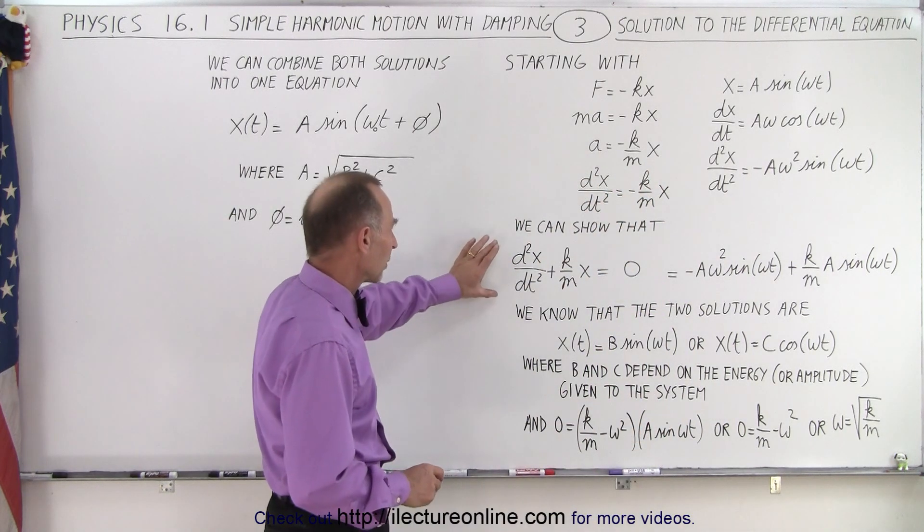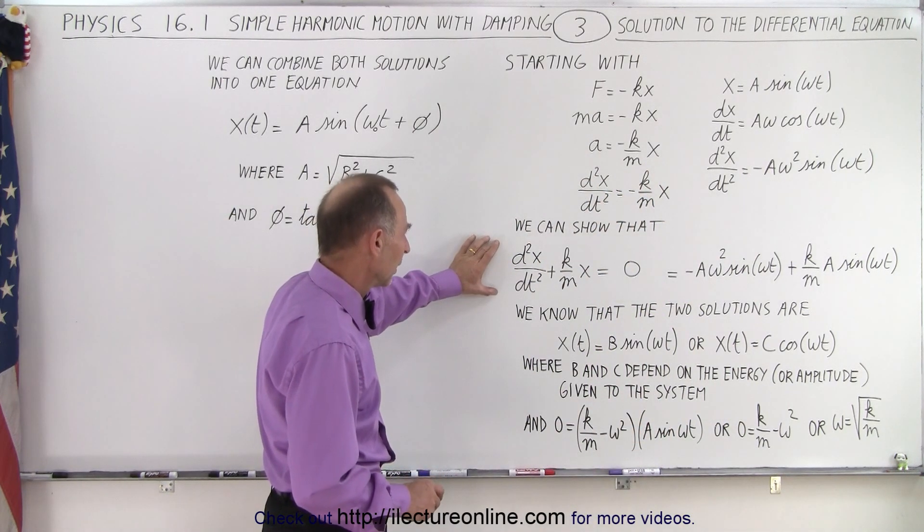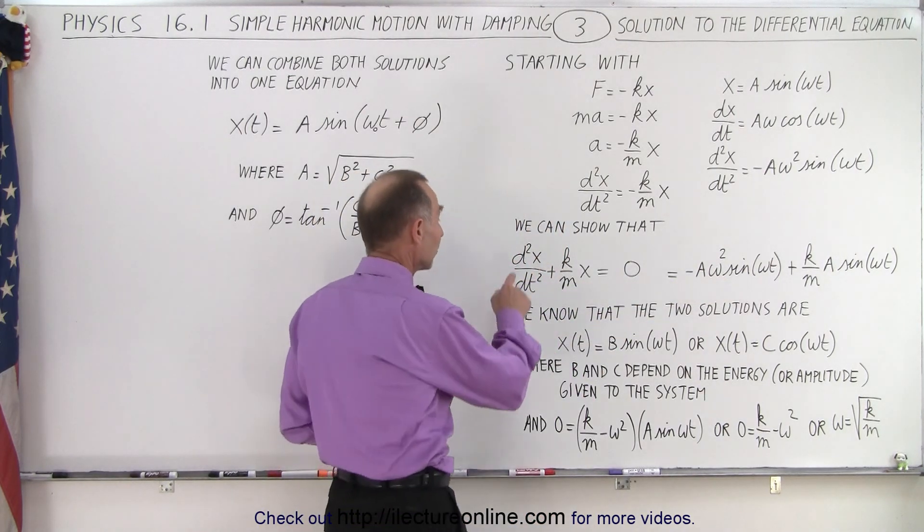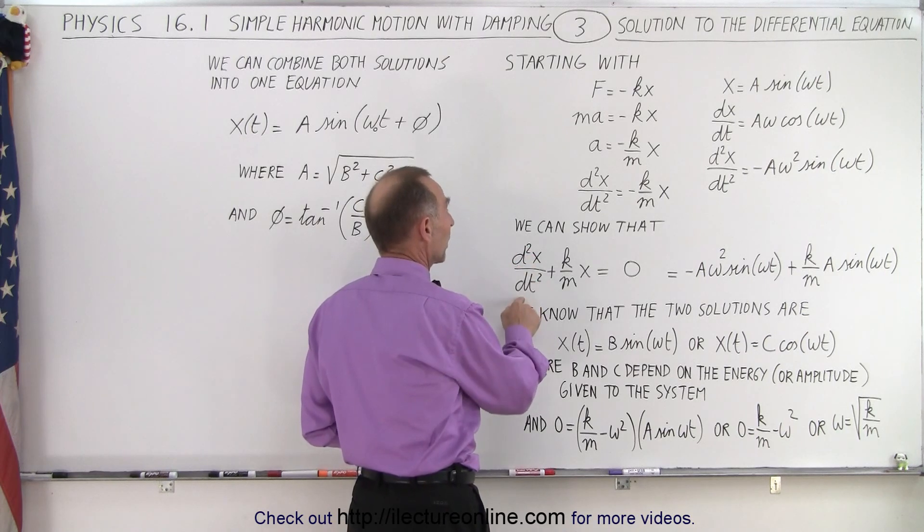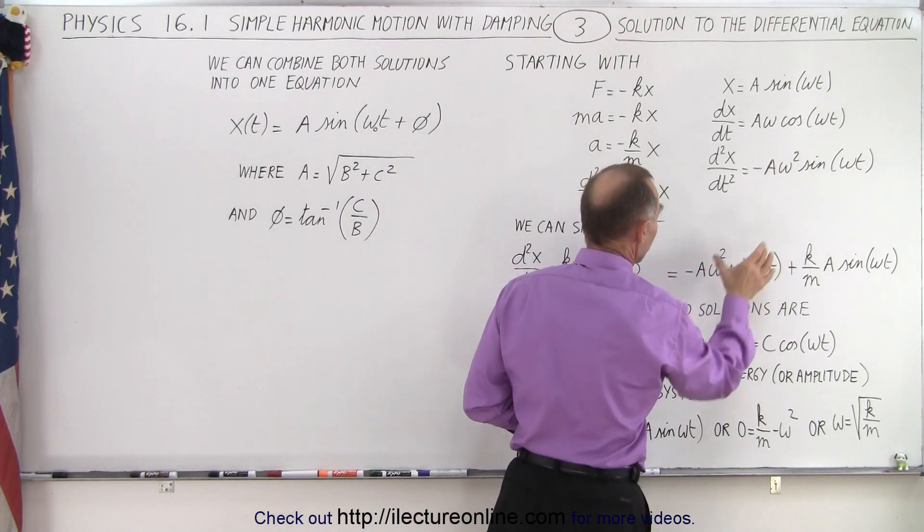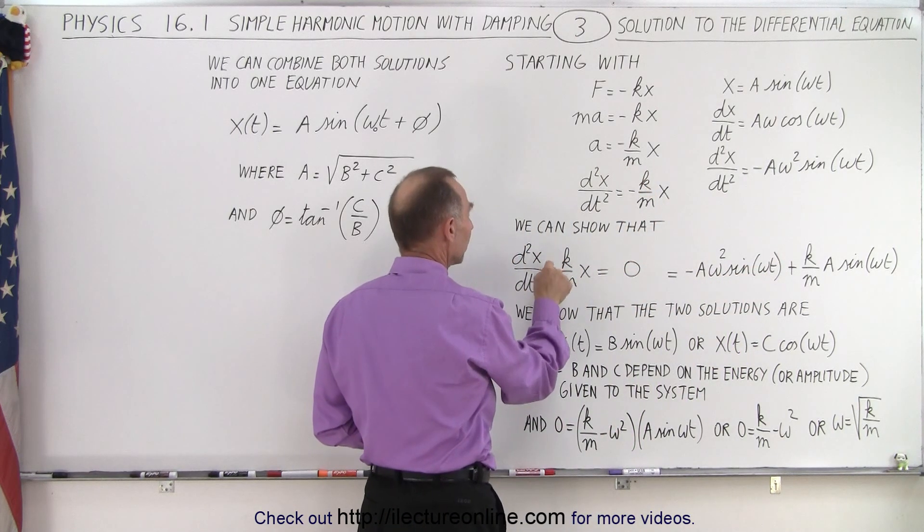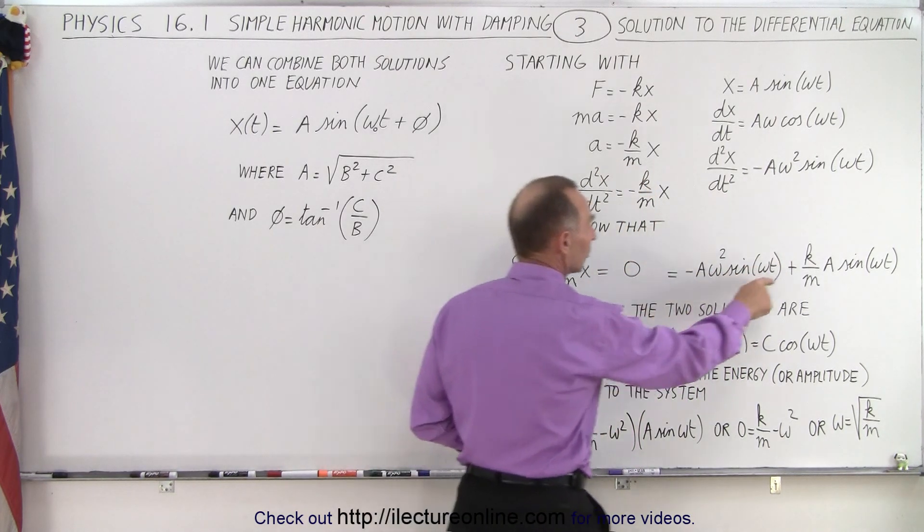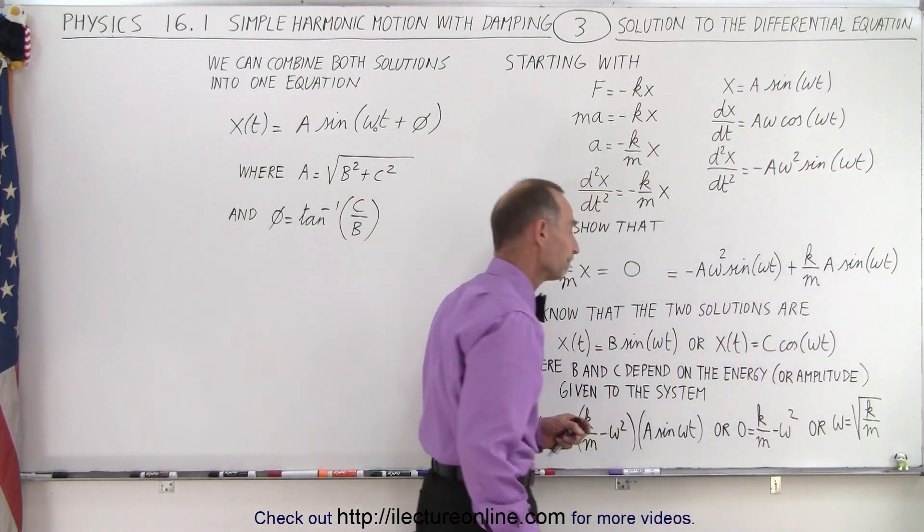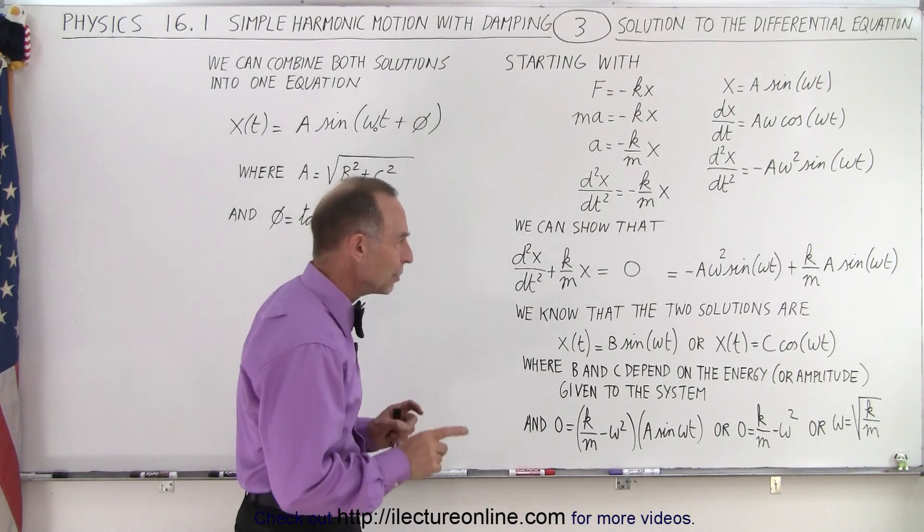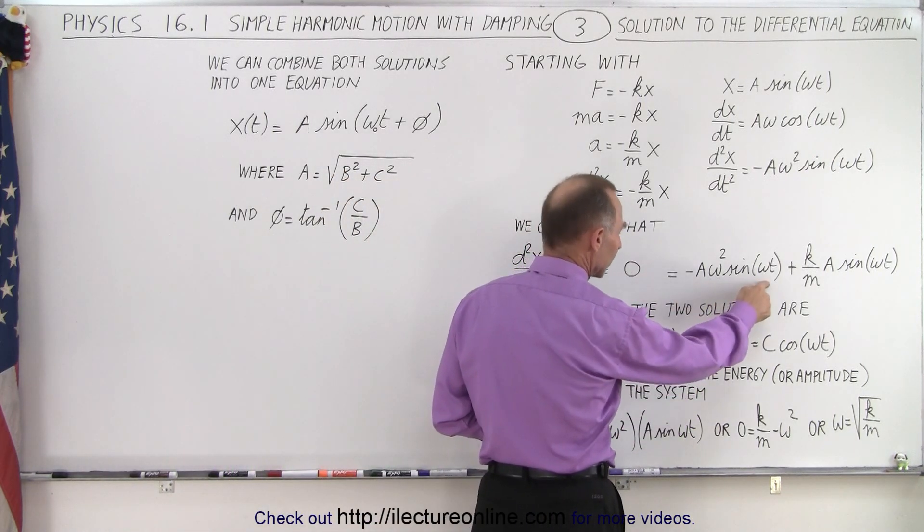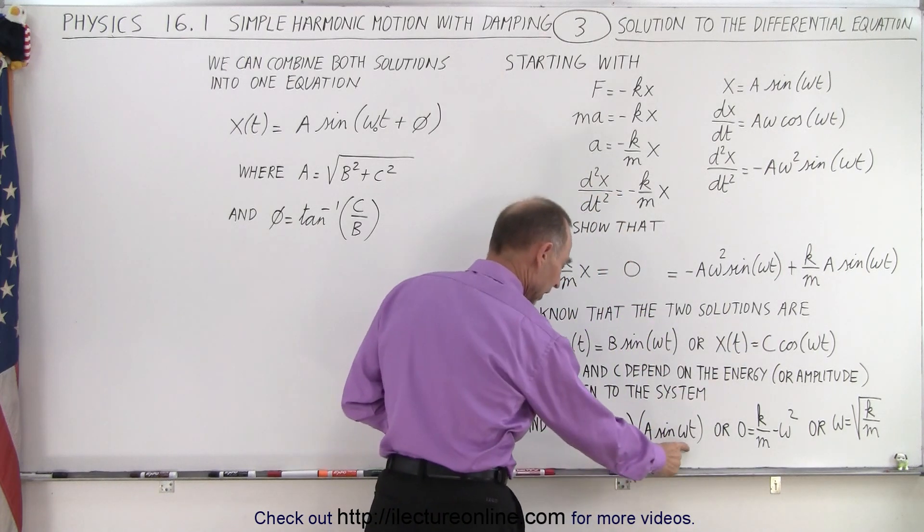Now what we want to do is we want to take our differential equation and rewrite it in these terms. Here we have the second derivative of x with respect to time, and that is equal to minus A omega squared sine of omega t, so we place that in here instead of this, and plus k over m times x, so plus k over m times x and x is equal to A sine of omega t. Why do we do that? Well what we can do on the right side is we can factor out an A sine of omega t, and we do that over here, A sine of omega t.